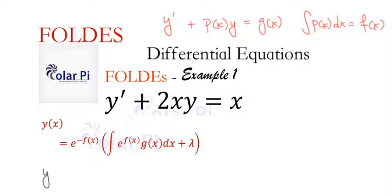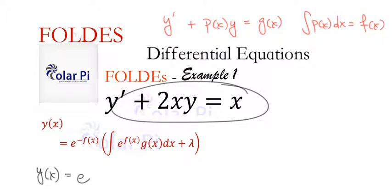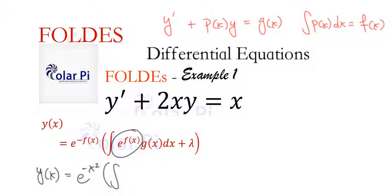So y of x our solution here is going to be: y of x equals e to the - we just said f of x is the integral of p of x and comparing this form to our given equation we see that p of x is 2x which means that f of x, the integral, is x squared. So we have e to the negative x squared and then we have parenthesis integral and this is e to the f of x.